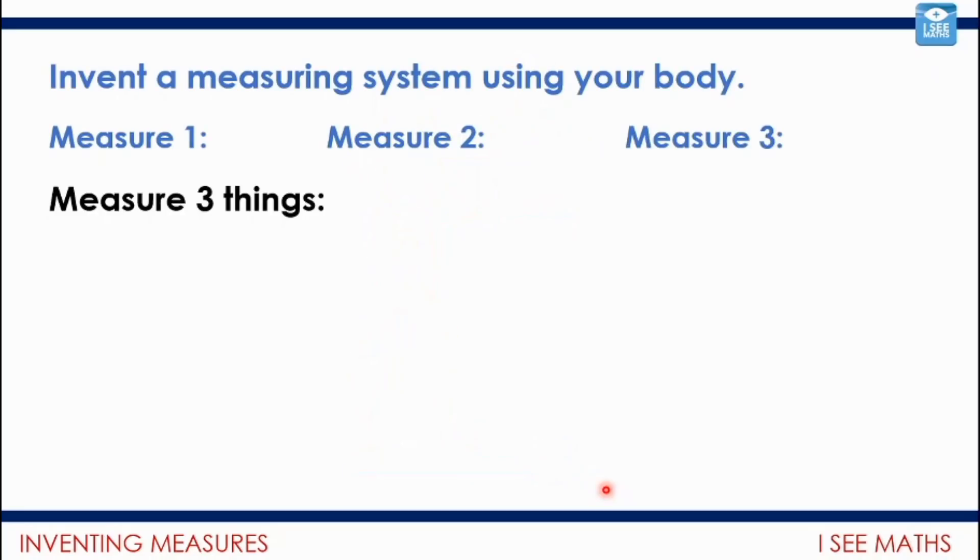Now, you're going to invent your own measuring system using some of the parts of your body. I'm going to give you three things that you're going to have to measure. And they're different length things. And before you do that, you're going to have to choose which parts of your body are you going to measure with. And you have to stick with the things that you choose to start off with. So your first job is this. Pause the video and choose which of your body parts, which three body parts, will you choose to measure these different length things. Write them down and only play the video when you've chosen them.